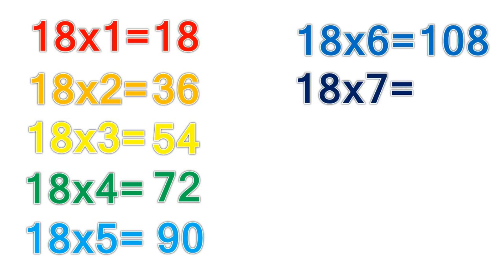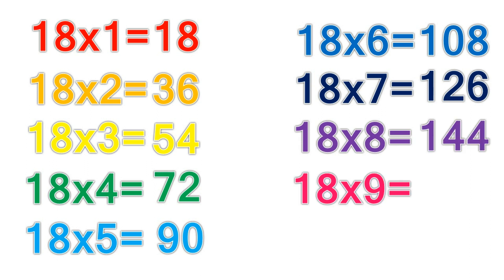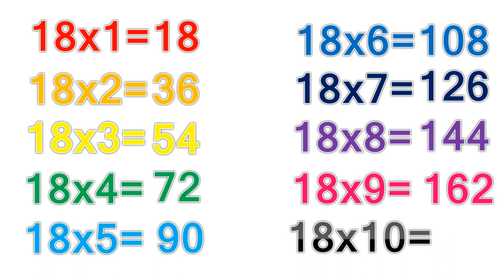18 times 7 equals 126. 18 times 8 equals 144. 18 times 9 equals 162. 18 times 10 equals 180.